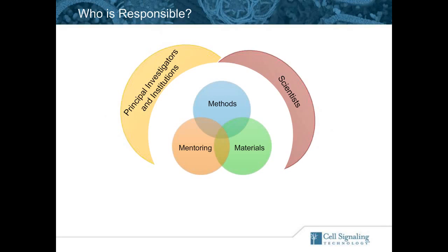Scientists, or the people using the reagents, are predominantly responsible for materials and methods. That means they should identify the materials they're using, clearly document the protocols, and make sure that other people can replicate the experiments. If scientists are a little more careful with how they use reagents and how they document that use, some of this reproducibility situation will be mitigated.